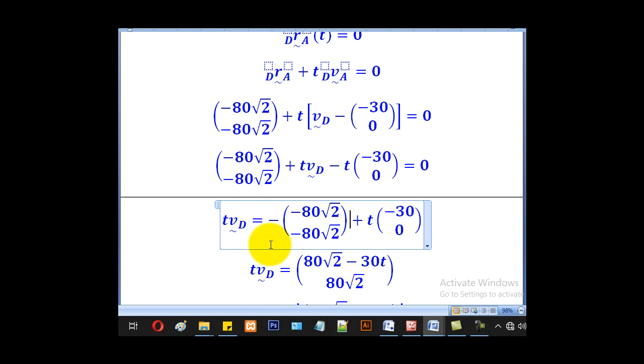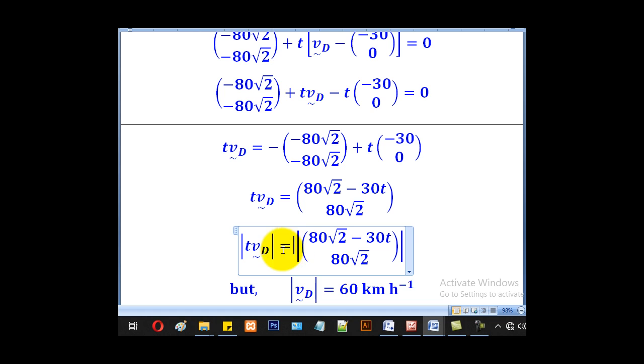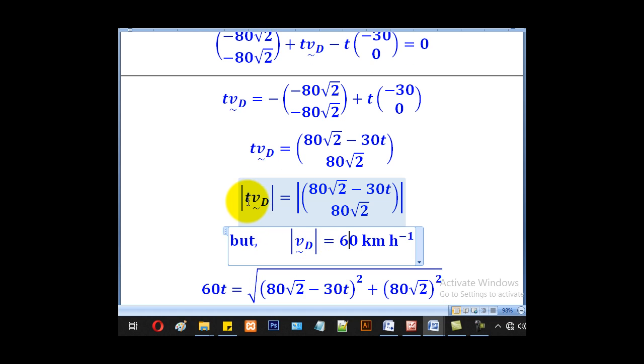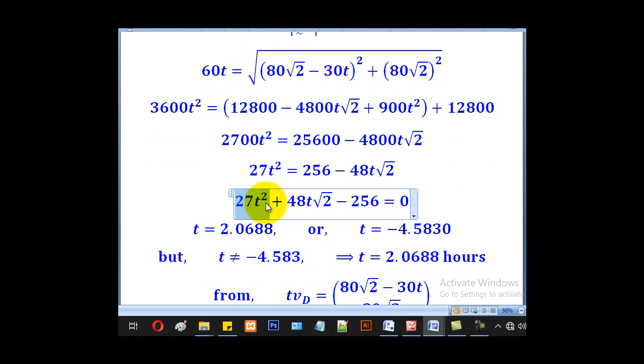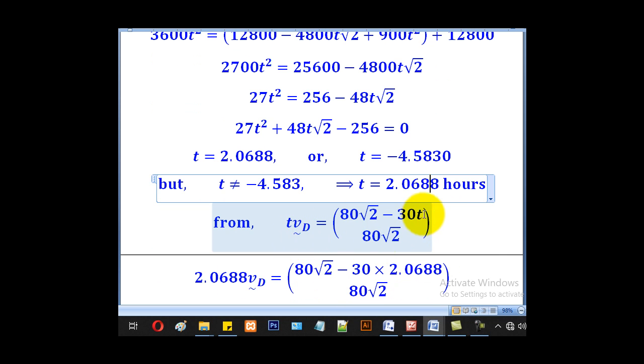We know the magnitude of v_D is 60. So we put magnitudes on both sides: |v_D| × T = 60T. For the vector, it will be the square root of the sum of squares. Next, we remove the square root by squaring both sides. When we simplify, we get a quadratic equation in terms of T: 27T² + 48T√2 - 256 = 0. When we solve this quadratic equation, we get T = 2.0688 or T = -4.5830. Since we begin from T = 0, we ignore the negative value and take 2.0688 hours. That's our time taken for collision to occur.